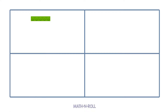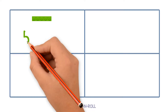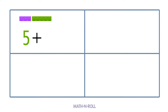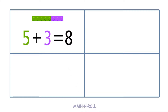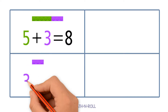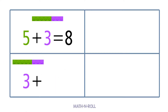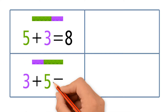What if we put together 5 green pieces and 3 purple pieces? We get 8. 5 plus 3 equals 8. We can change the order of the add-ins. Let's put 3 in the front. 3 plus 5 equals 8.